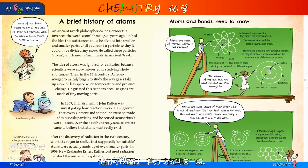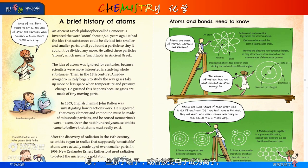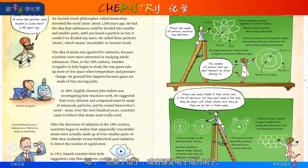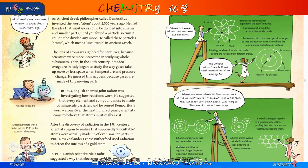They can do this in three ways. First, some atoms give or take electrons to become ions. There are positive ions — when you give electrons, you become a positive ion; when you take electrons, you become the opposite, a negative ion.